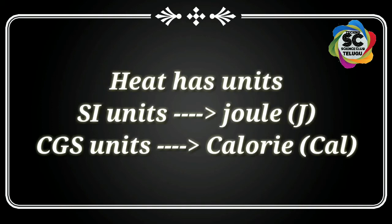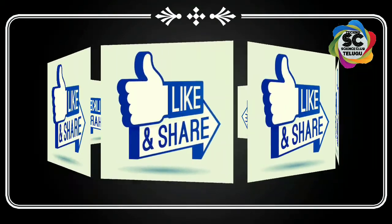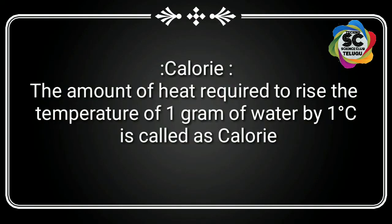Heat has units: the SI unit of heat is joules and the CGS unit of heat is calories. Let's define the calorie — the amount of heat required to raise the temperature of one gram of water by one degree centigrade is called one calorie. In other words, one calorie is the heat needed to heat one gram of water by one degree.